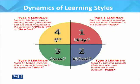Type 1 learners are feeling and reflecting learners. They learn by seeking meaning and are most interested in the question 'Why?' They like learning connected to real-life problems and ask: 'Why do I need to learn this?' Type 2 learners are reflecting and thinking learners. They learn by thinking through ideas and are most interested in the question 'What?' They prefer logical abstract thinking, working with facts and ideas, and ask: 'What do I need to learn?'